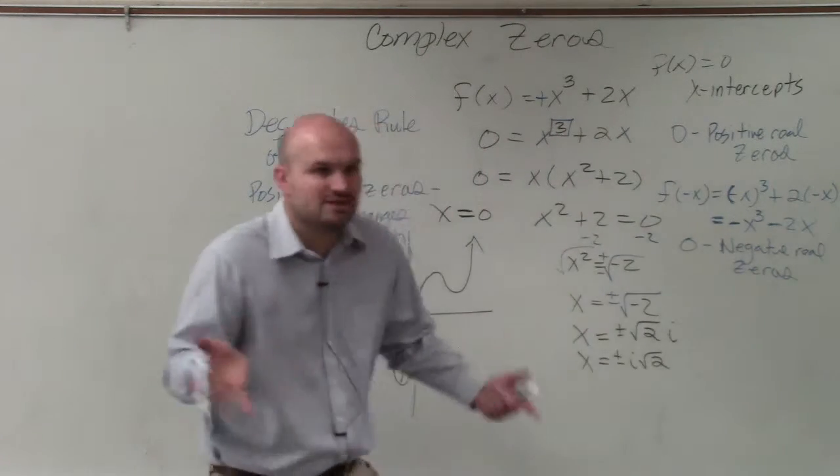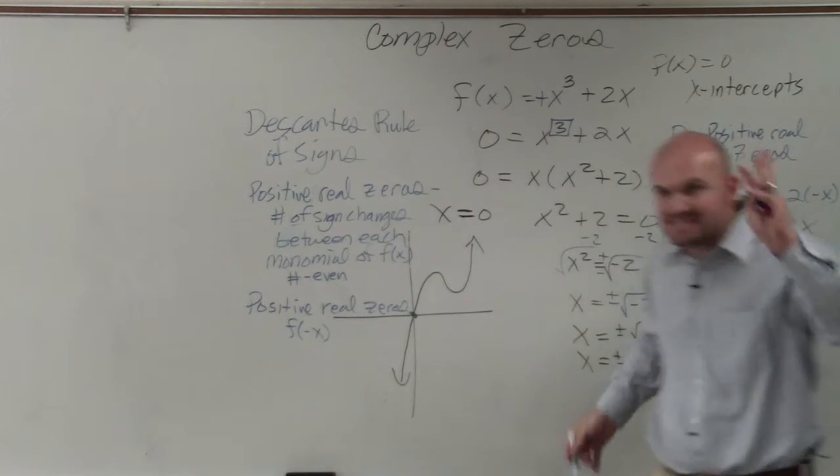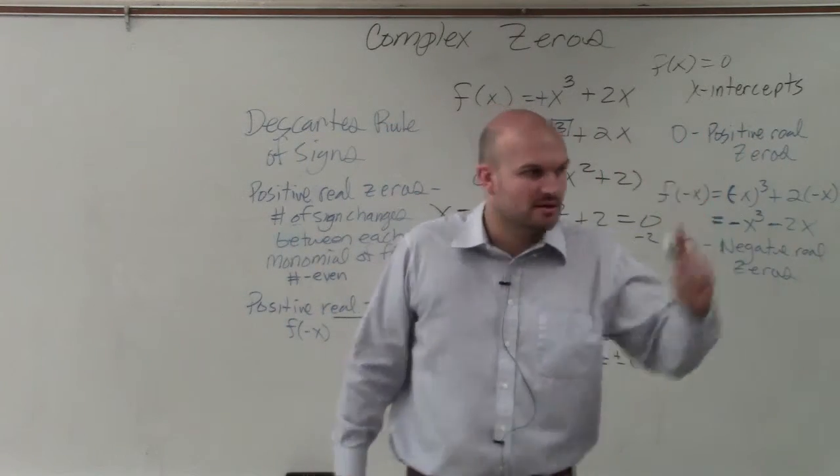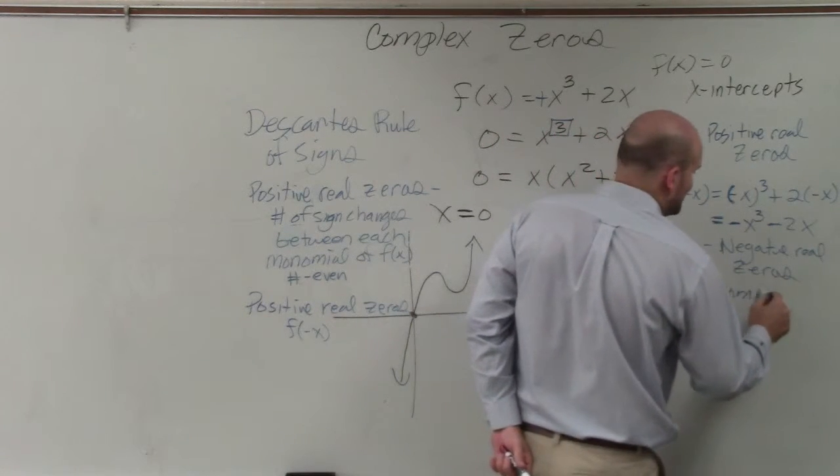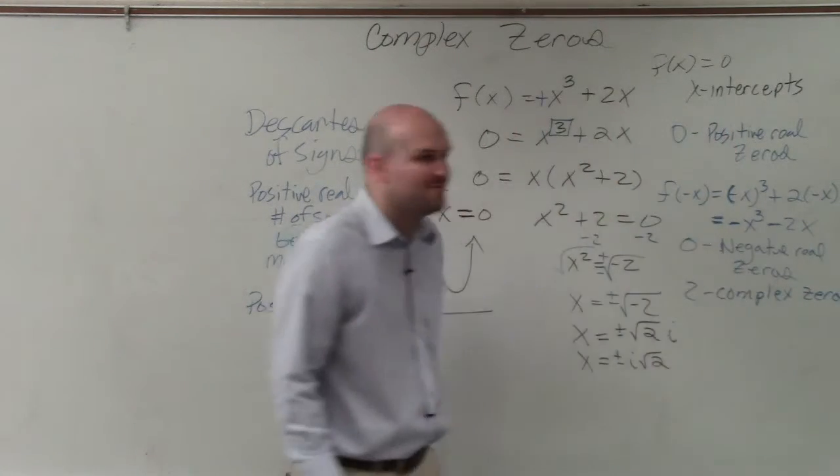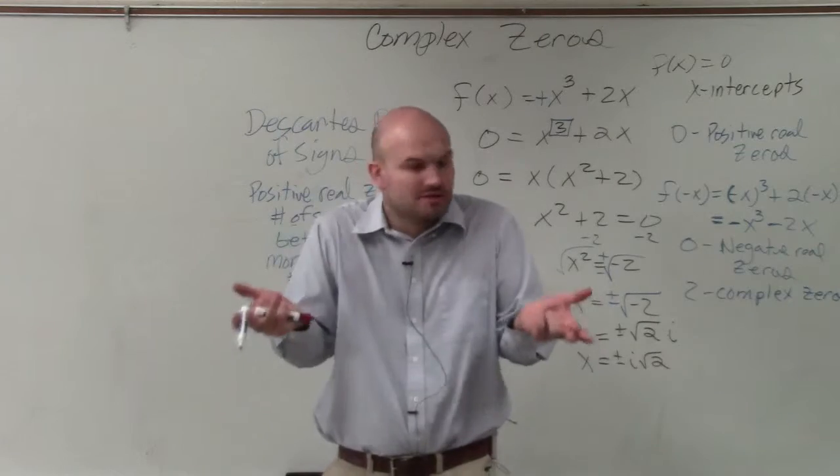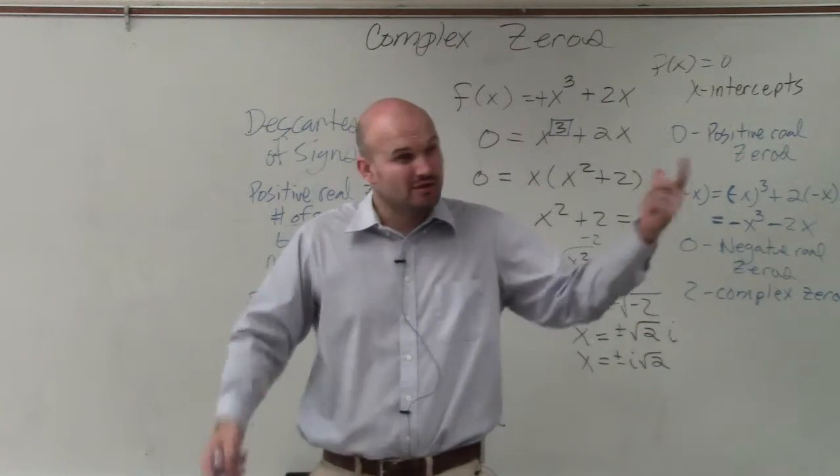However, we know the fundamental theorem of algebra says there has to be three zeros, right? So I know that there has to be two complex zeros. I can't have four complex zeros and I can't have three. Because remember, complex zeros only come in pairs, plus or minus, right? So I can only have two.